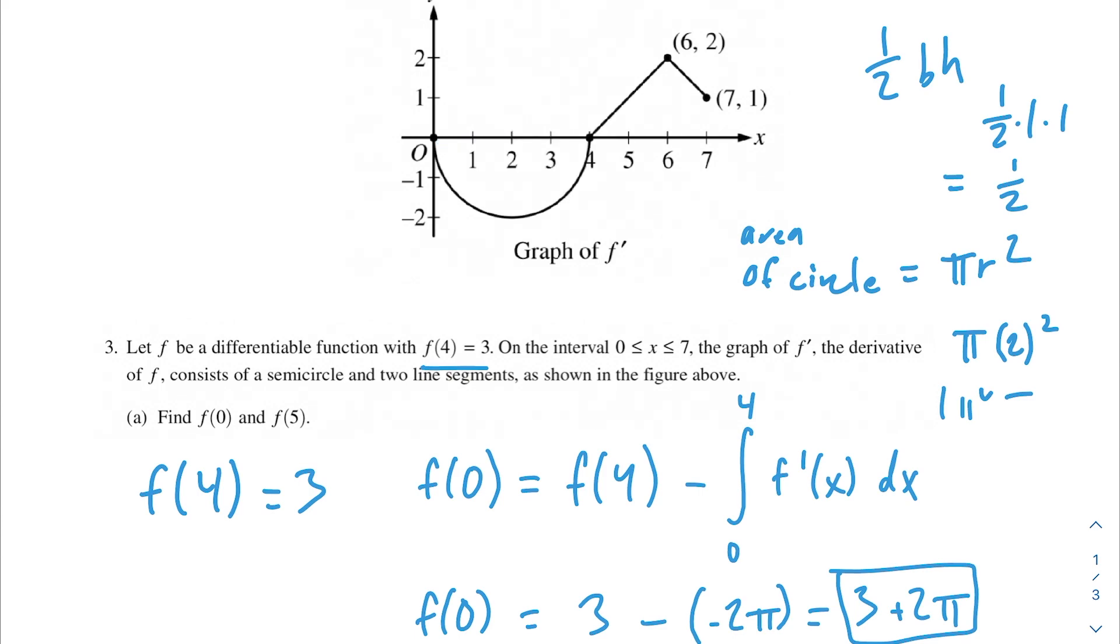Remember that points of inflection happen where f double prime of x equals 0 or undefined. So the points at which f''(x) = 0 or undefined would be at 2, 4, and 6. The derivative here would be 0. The derivative of 4 would be undefined since it's this weird combination of the semicircle and the line. And the derivative at x = 6 would be undefined as well because it's on that cusp.